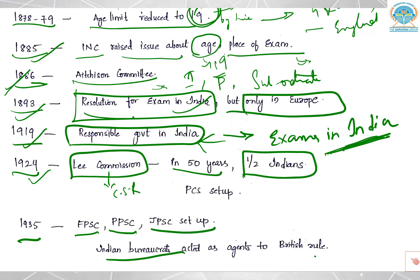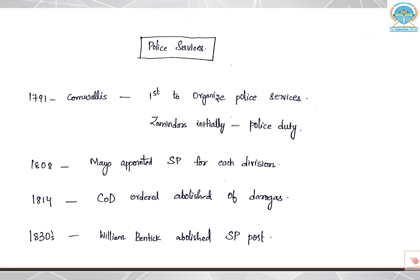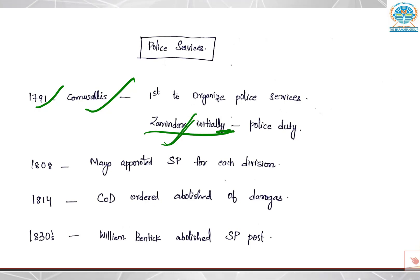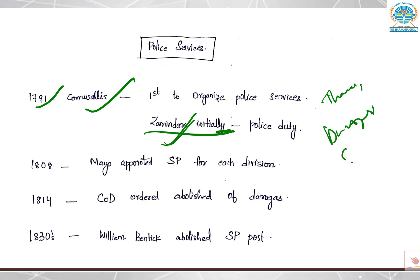Indian bureaucrats acted as agents to British rule. Now we will see the development of police services through chronology. In 1791, again it was Cornwallis who was the first to organize police services, just like the civil services. Initially, Zamindars did the police duty along with their revenue function. Cornwallis then set up different levels like Thanas, Darugas, and SP — Superintendents of Police.